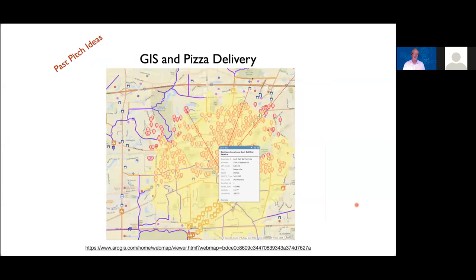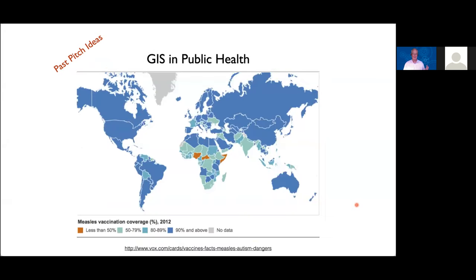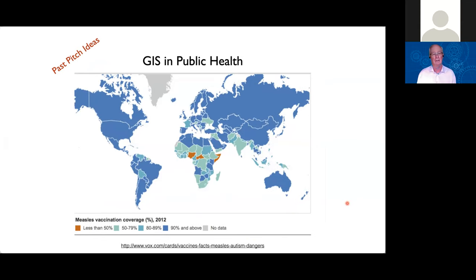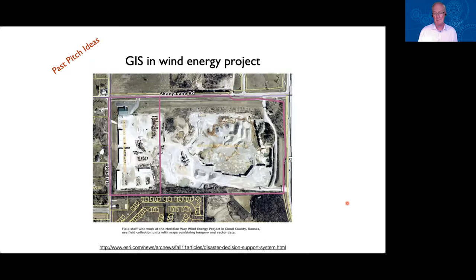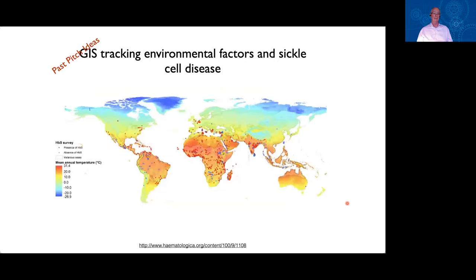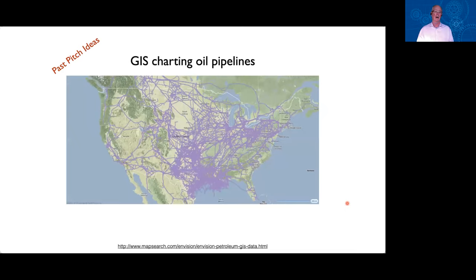Here are a few past pitches from a couple of years ago. Pizza delivery was popular for some reason—maybe always popular. GIS and public health has seen a lot of interest, especially now with the pandemic and coronavirus. There's always been interest in public health in the GIS field. There was a past pitch on a wind energy project that used GIS, and another medical-based pitch looking at sickle cell disease and tracking environmental factors connected with that. One pitch looked at the oil pipeline system, particularly in the United States.